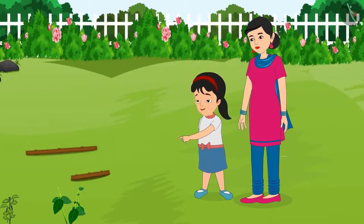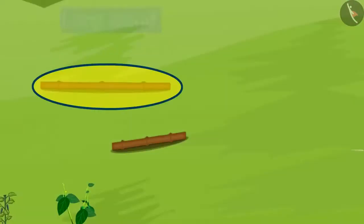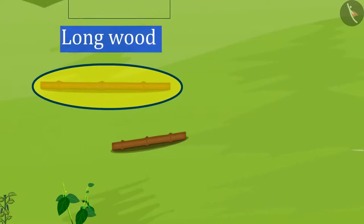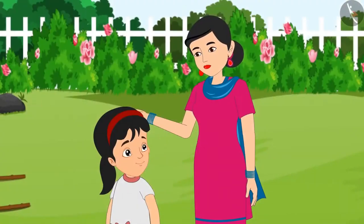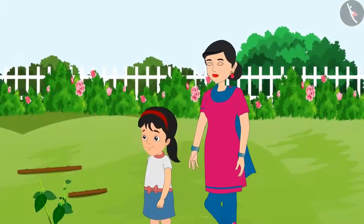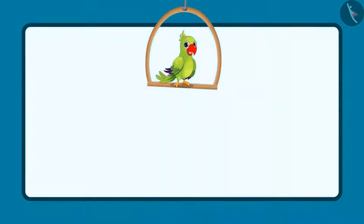'Now look around and give me another example of a long object and a short object. Can you do that?' 'Mummy, please look at these two sticks. Out of these, this stick is long and this stick is short. Right?' 'Yes, Pinky. Very good. Now let's go home.'